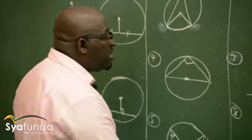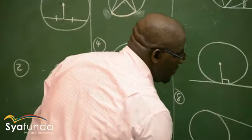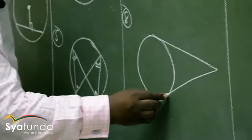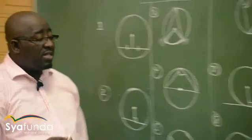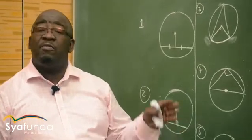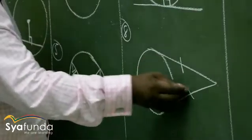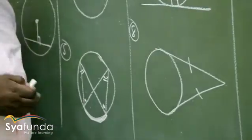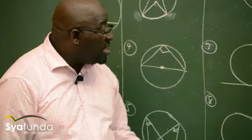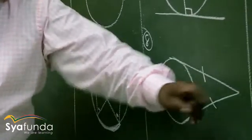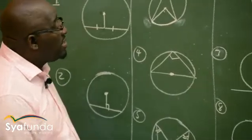Another theorem that deals with the tangent: whenever I've got a tangent and another tangent from the same point, this theorem says that if you've got two tangents coming from the same point, they will always be equal at the point of contact with the circle — not beyond, but at the point of contact. So these are the two tangents theorem: two tangents from the same point will always be equal.